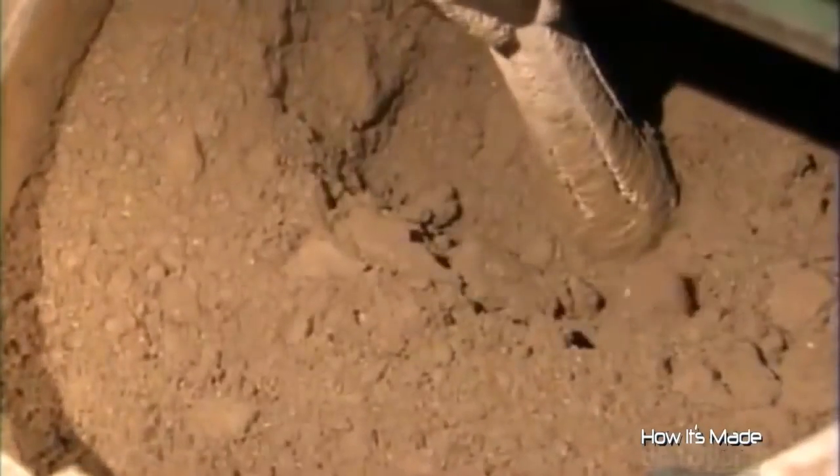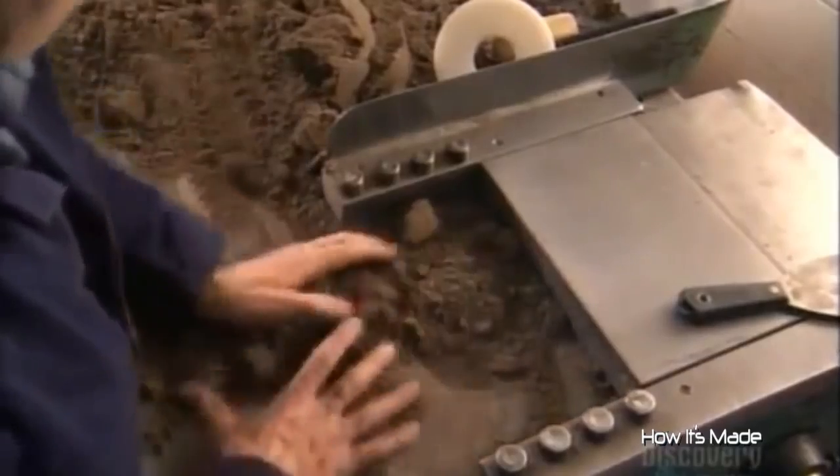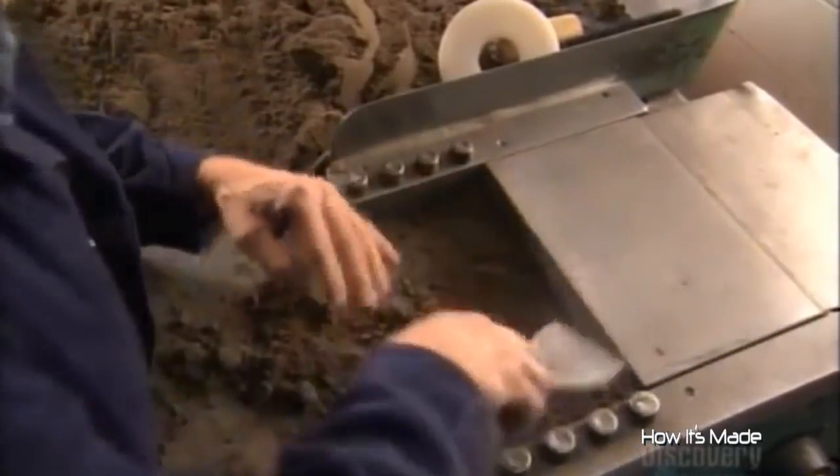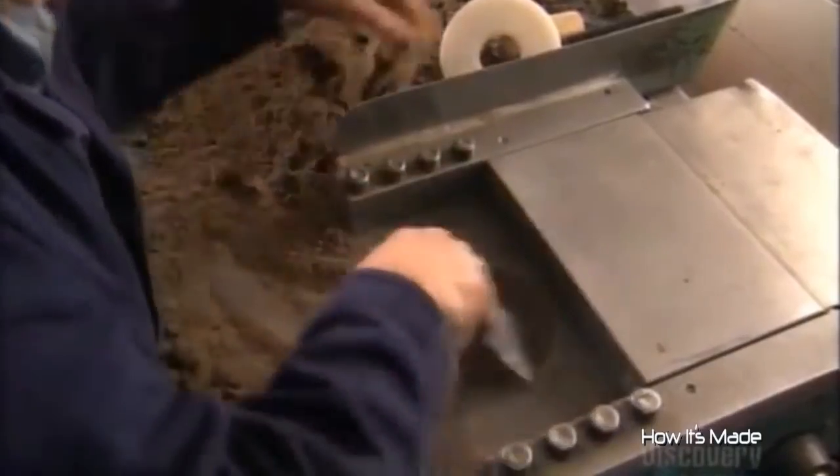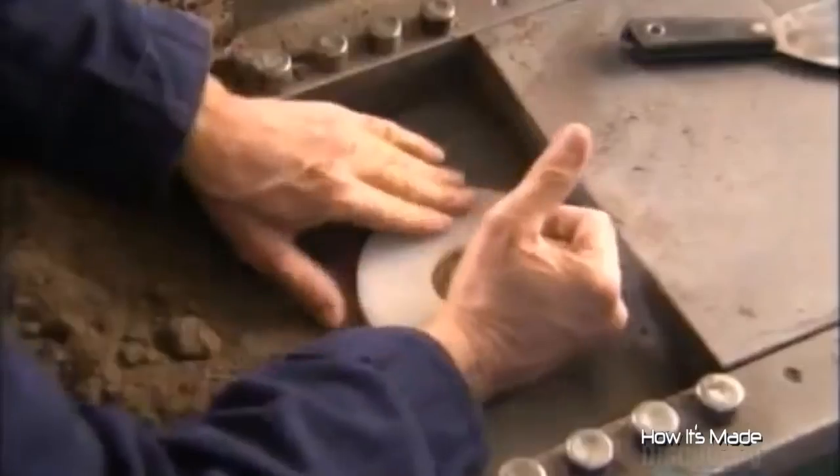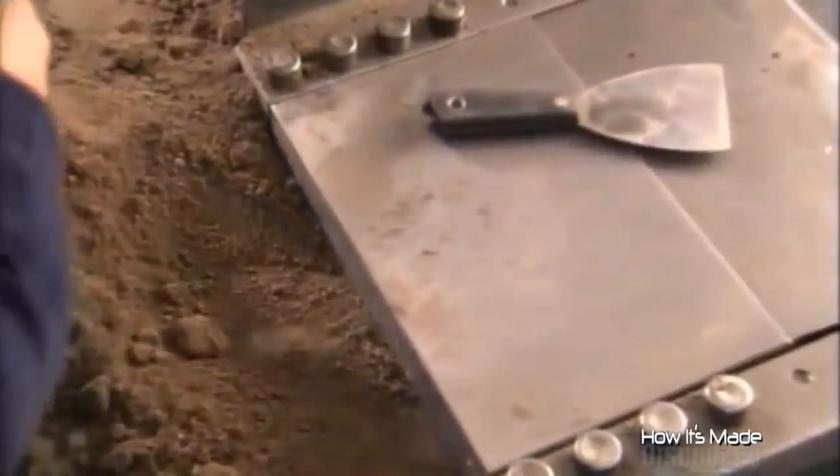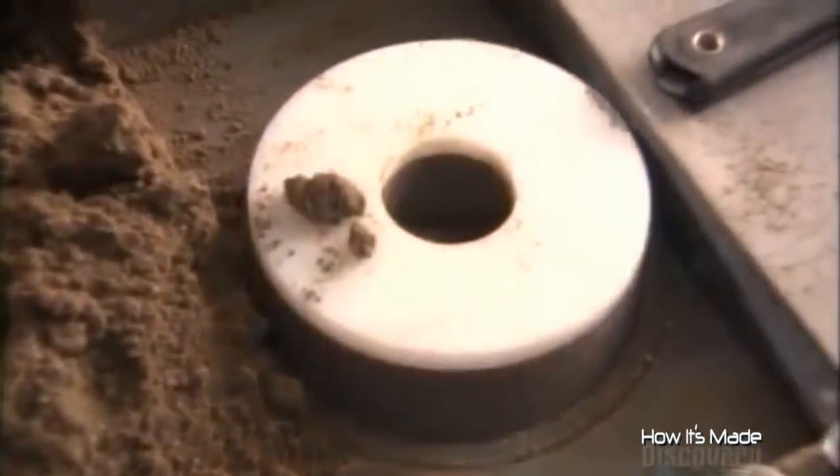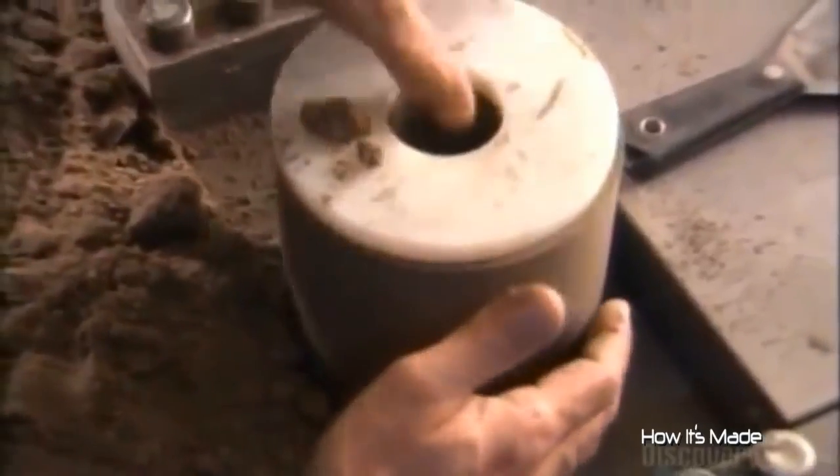Workers mix the ingredients with a bit of glue until they turn to the consistency of wet sand. A worker then packs the mix into a machine that forms it into slugs with a hole down the middle. He adds a plastic cap, then a metal cover slides on and the machine takes over. It takes only a minute for the machine's piston to compress the powder into a solid.